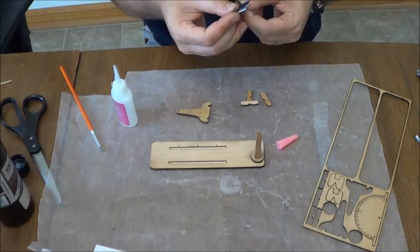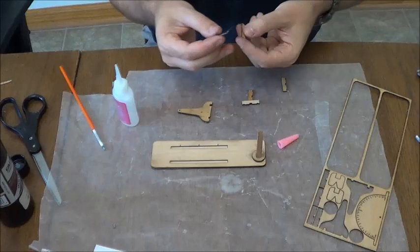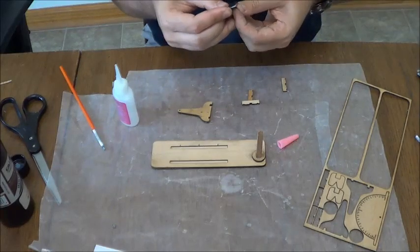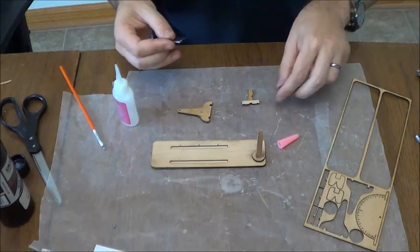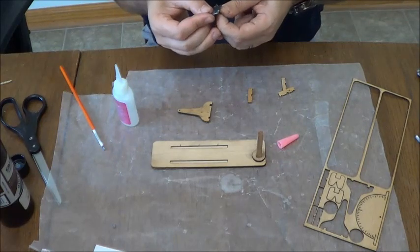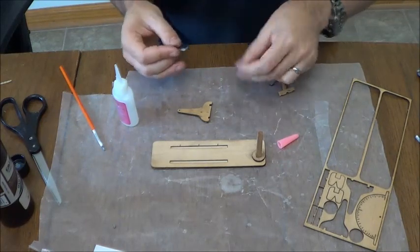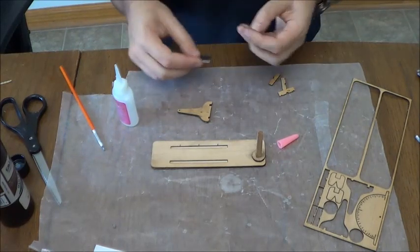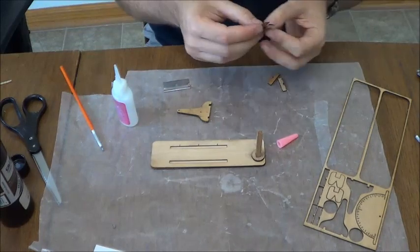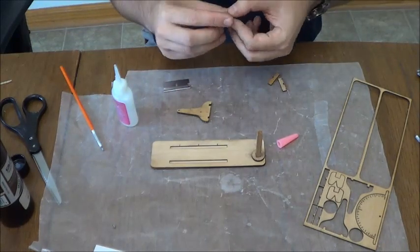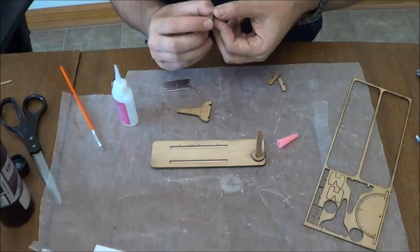You will want to take little burrs off the bottom of these elsewhere, you don't have to worry about it. Since these are going to ride in those tracks, you do want them to be correct. Now you'll take these in pairs and you'll glue them together like so.